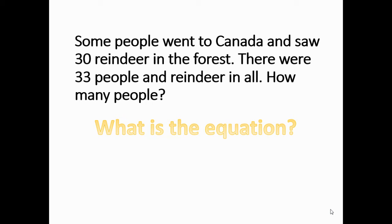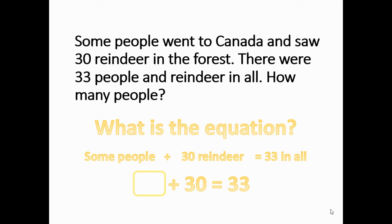So let's find the equation. Let's look at what we already know. We know there are some people, and we know there are 30 reindeer, which equals 33 in all. So we have something plus 30 equals 33. Pause the video and discuss with your learning coach what should go in this blank.